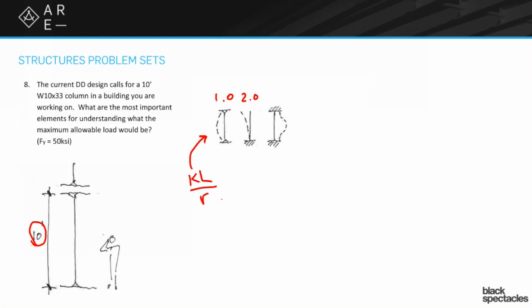So that means that what we're trying to figure out here is, well, we need to know how tall it is, what kind of connections there are. In this case, the pin connections, and therefore that's going to lead us to how that KL over R is going to work. And then the other thing we'd want to know would be more about the W10 by 33, but we can look that information up. And in this case, that's the R, that radius. Yeah, so if you go to a bigger W10, the R value is going to go up. So that'll help bring the KL over R value down and give you more capacity, like we were saying.